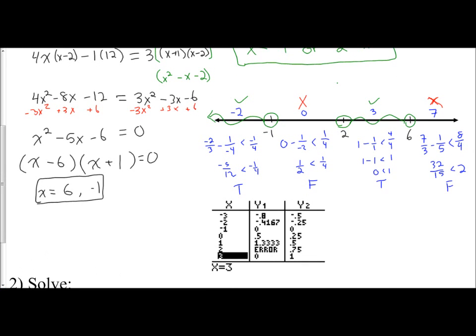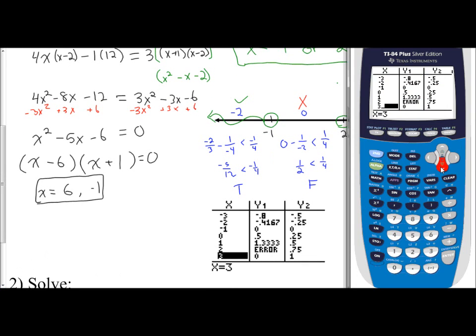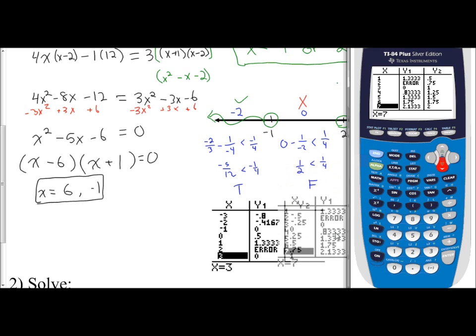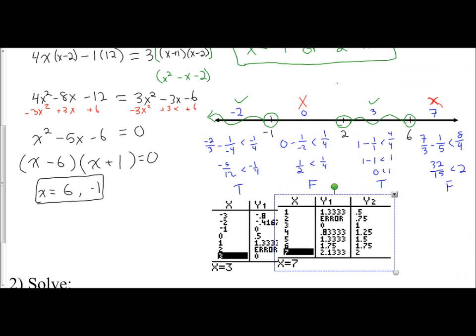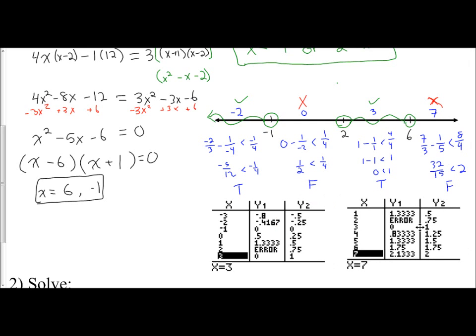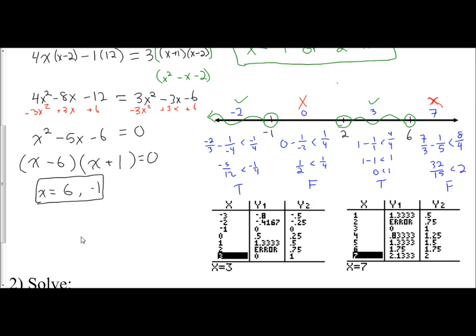At x equals negative 2: y1 is negative 4.167, y2 is negative 0.25 — is y1 less than y2? Yes. At x equals 0: is 0.5 less than 0.25? No — false. At x equals 3: is 0 less than 1? Yes — true. At x equals 7: is 2.1 less than 2? No — false. This confirms the calculator is a useful tool for checking where intervals are true or false when solving rational inequalities.